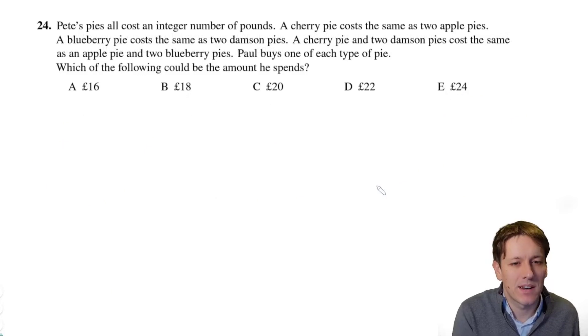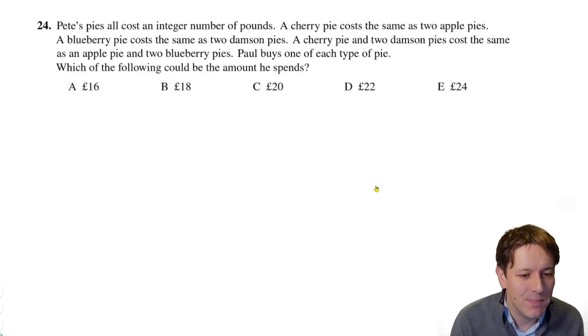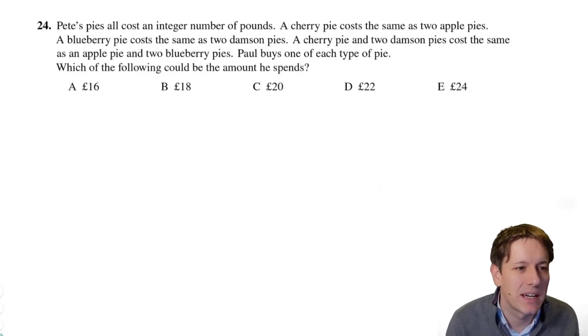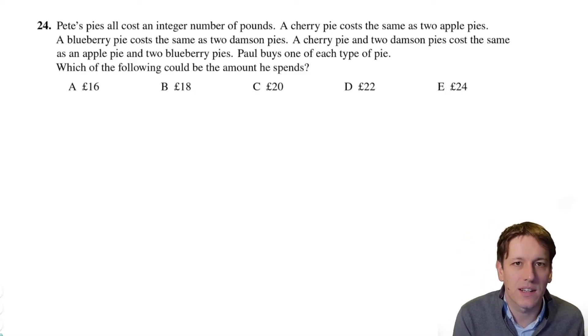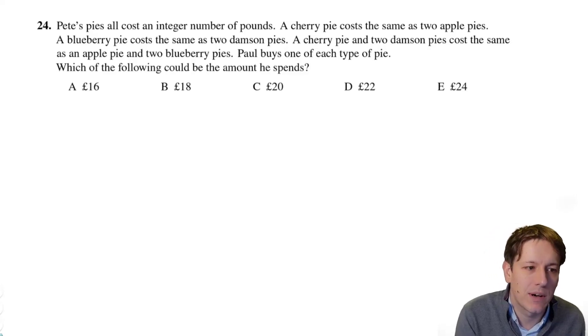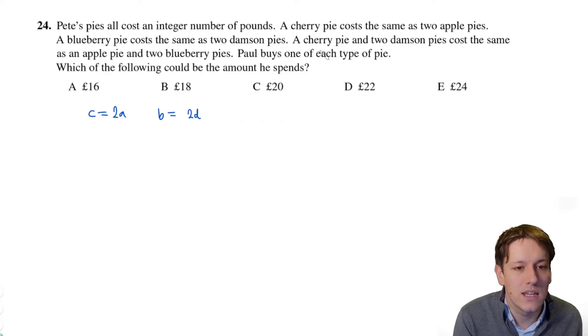So helpfully these pies have names that start with A, B, C and D, so we'll call A an apple pie, B a blueberry pie, C a cherry pie and D a damson pie. And I'll just start trying to write things down algebraically and see where it gets us. So a cherry pie is the same cost as two apple pies, so let's write C equals 2A. A blueberry pie is the same as two damson pies, so B equals 2D.